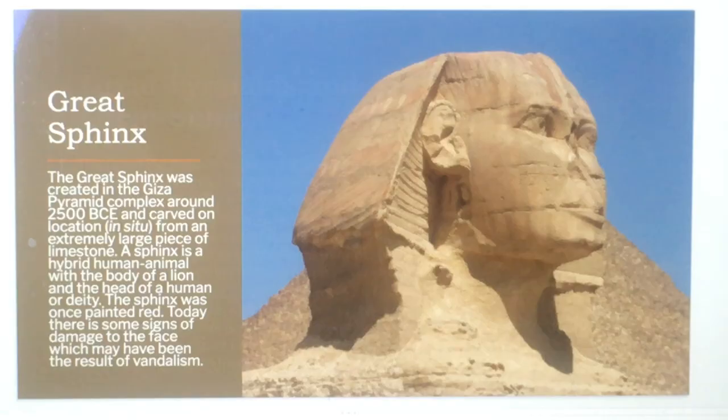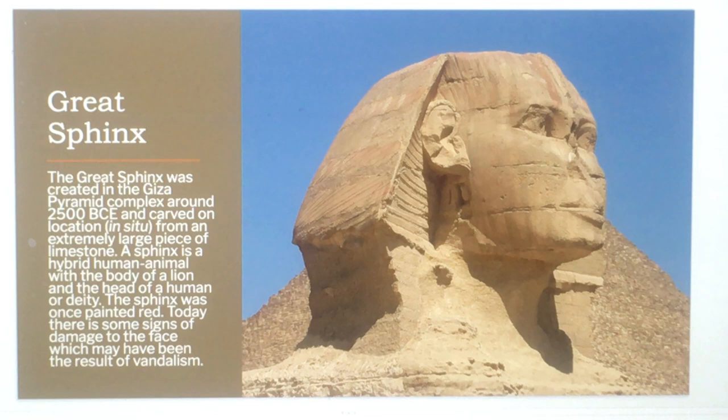The Great Sphinx was created in the Giza pyramid complex around 2500 BCE and carved on location — in situ, meaning right there where it stood — from an extremely large piece of limestone. A Sphinx is a hybrid human-animal with the body of a lion and the head of a human or deity.